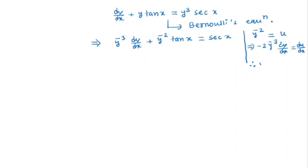So we get y to the power minus 3 dy/dx is minus 1/2 du/dx. Therefore, minus 1/2 du/dx plus u tan x equal to sec x. So simplifying, du/dx minus 2u tan x equal to minus 2 sec x.